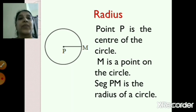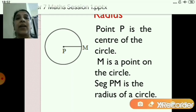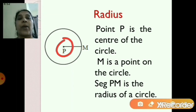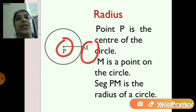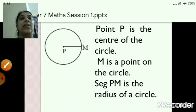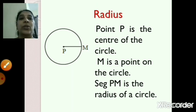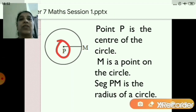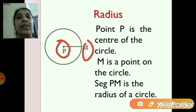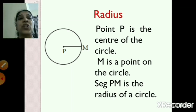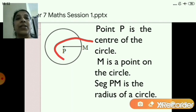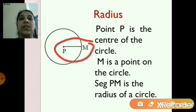Now you can see here, the circle has been drawn. In the center, it is the point P, and here there is a point M on the circle. So you are going to draw the circle with the help of a compass, and you are going to keep it on the point P and then draw the circle. Now let's see what we mean by radius. Point P here is the center of the circle, and this point M is a point on the circle. So what is your radius? Segment PM is your radius of the circle.